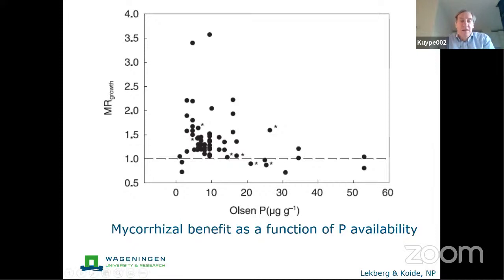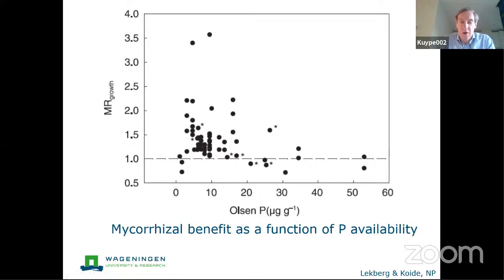The benefits plants derive from mycorrhiza depend very much on the amount of phosphorus available — mineral phosphorus or phosphate in the soil solution. As you increase fertilizer levels, the mycorrhizal benefit decreases. The y-axis shows the relative benefit, indicating the percentage increase in mycorrhizal plants compared to non-mycorrhizal plants.